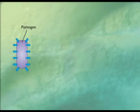Vaccines present antigens from a pathogen to stimulate immunity. Antigens are parts of a pathogen that the immune system can recognize, such as a surface protein.